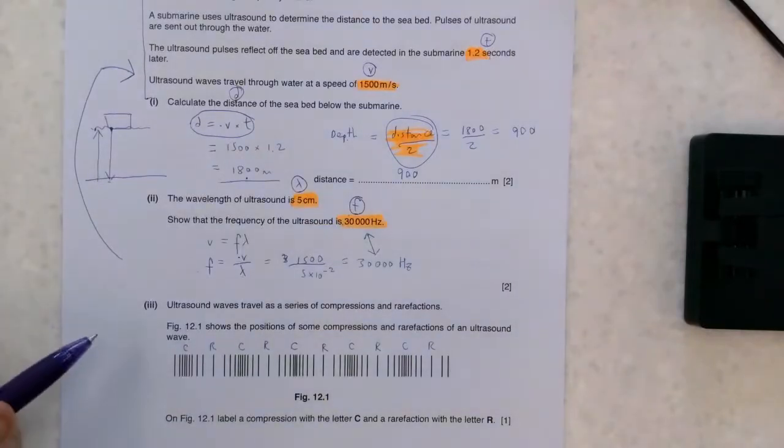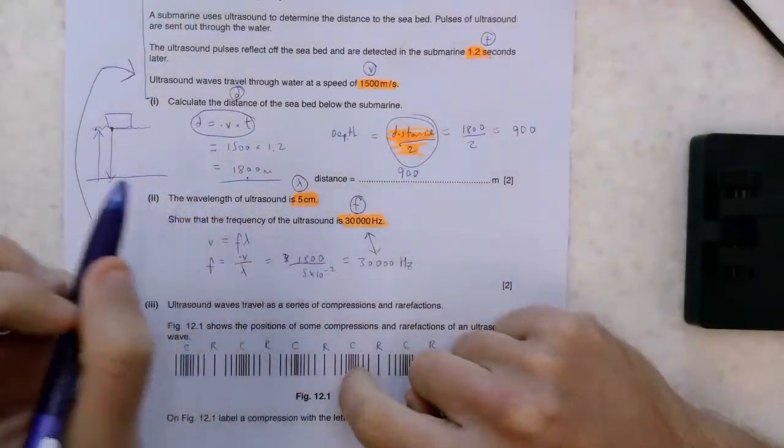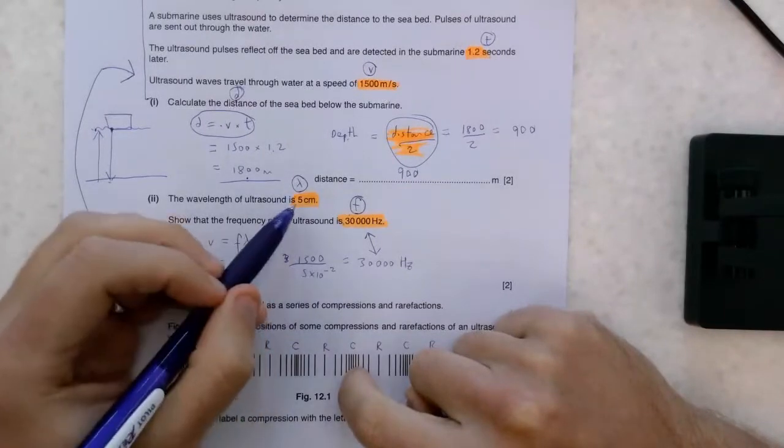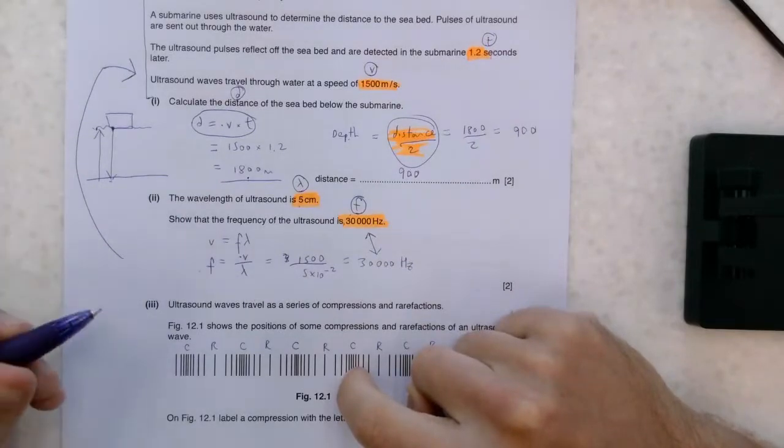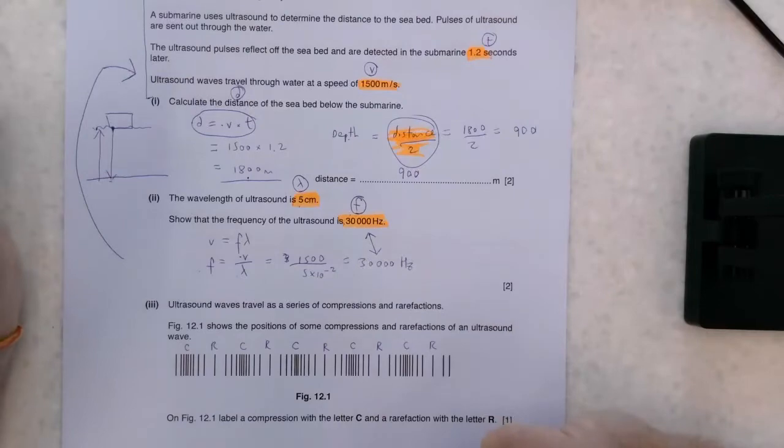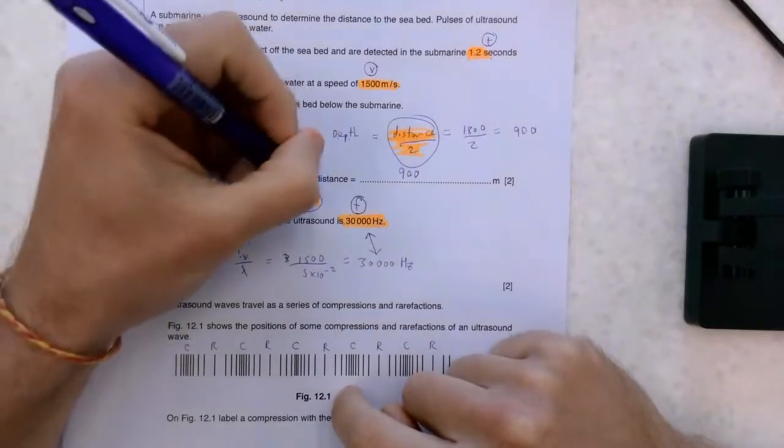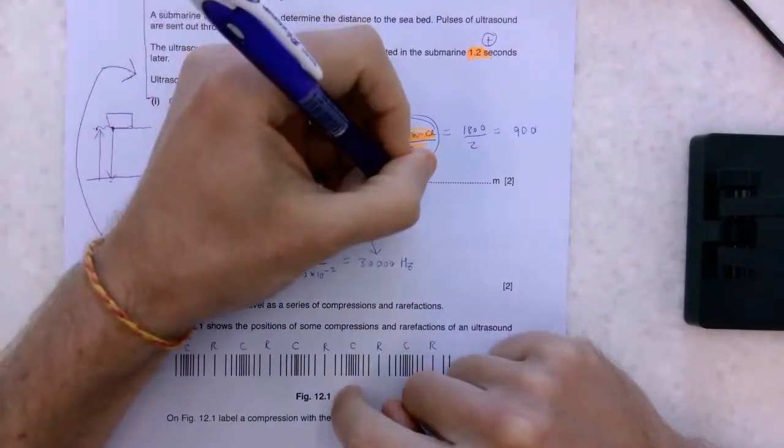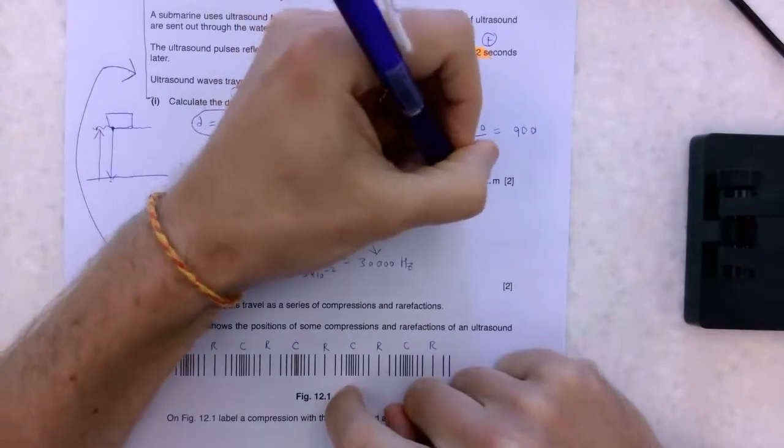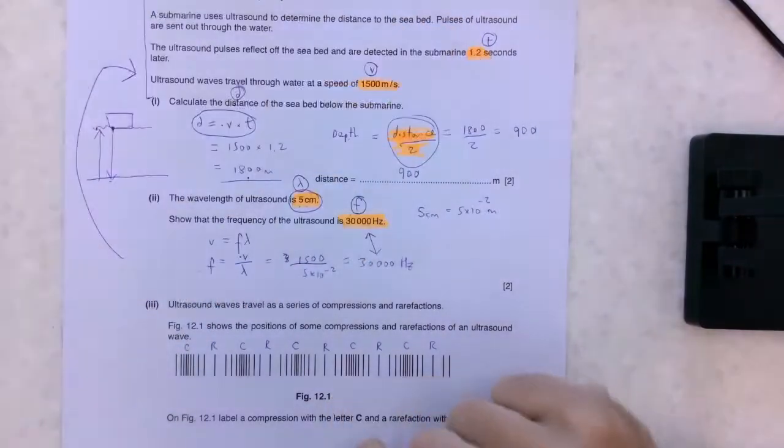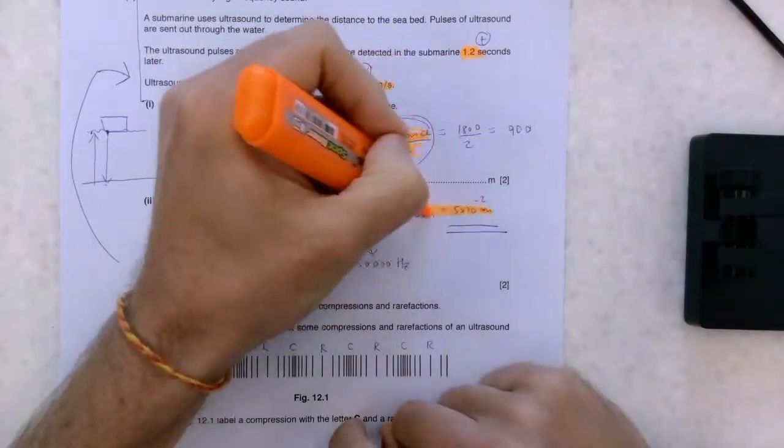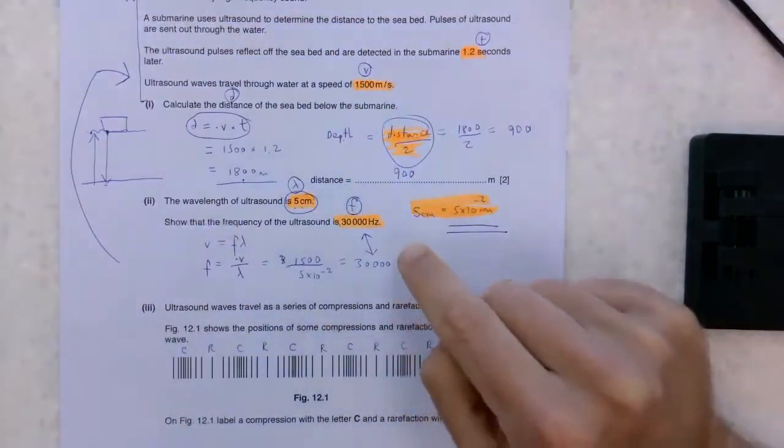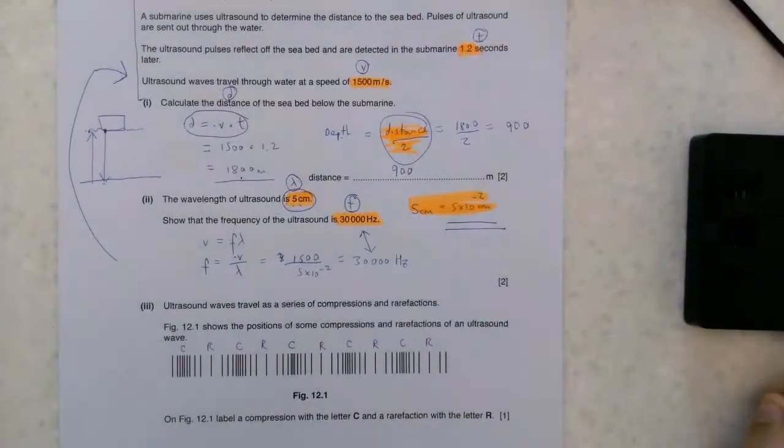Now, this is where you might come into some trouble, because if you simply take our 1,500 and divide it by 5, then you will not get this number. You will get a number which is too small. It will give you 300. However, what we're missing here is the fact that this has been stated in centimetres. You should know that 5 centimetres is equal to 5 times 10 to the minus 2 metres. And whenever we're using wavelength, we must state it in metres. We do not use it in centimetres. So, if you found the first time that you didn't get this answer, the reason for that is probably because you didn't convert.